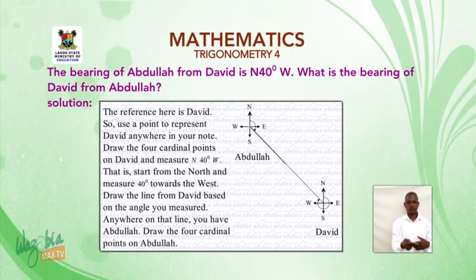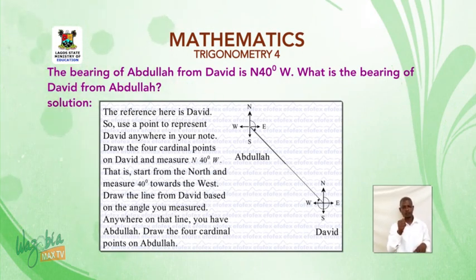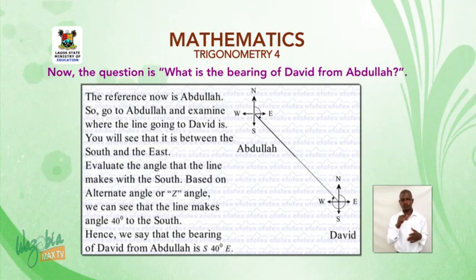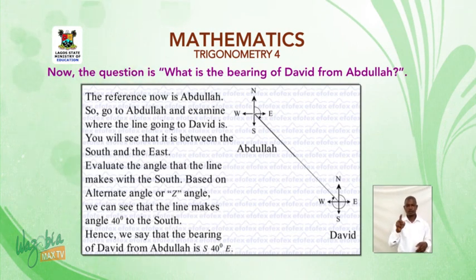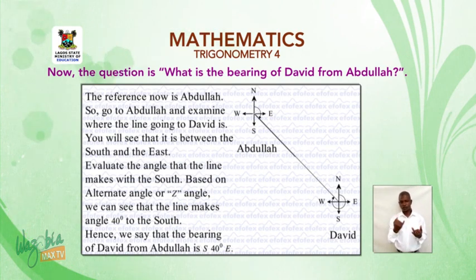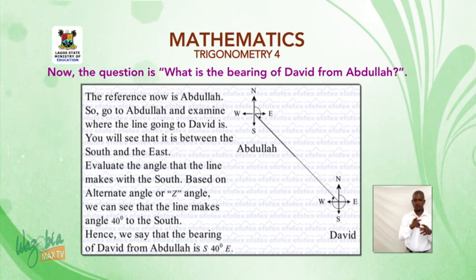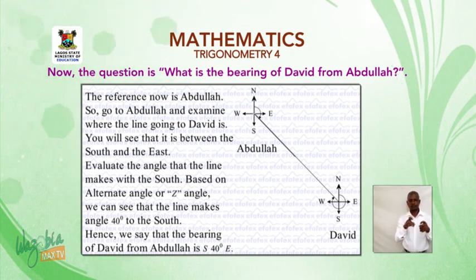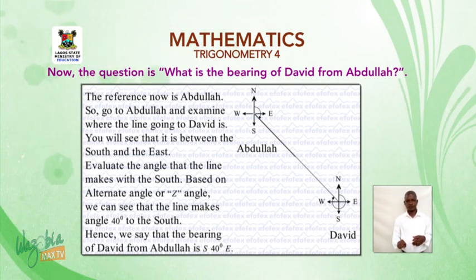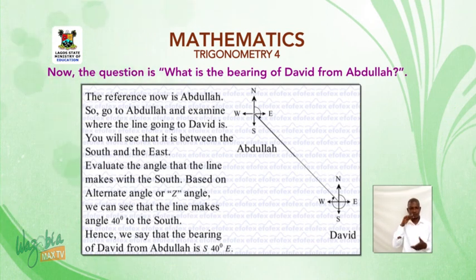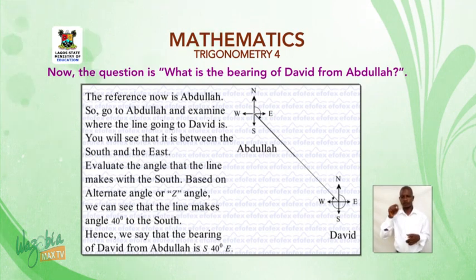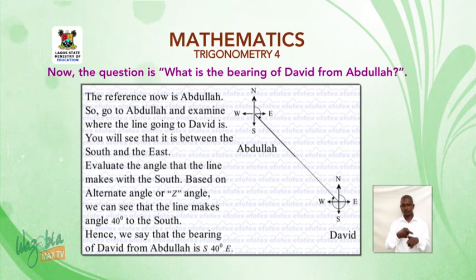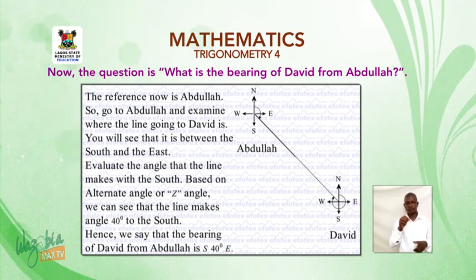Anywhere on that line you have Abdullah. Draw the four cardinal points on Abdullah as well. The question is: what is the bearing of David from Abdullah? The reference is now Abdullah. Go to Abdullah and examine where the line going to David is — you will see that it is between the south and the east. Evaluate the angle that the line makes with the south. Based on our Z-angle, the line makes 40 degrees to the south. Hence, the bearing of David from Abdullah is 40 degrees east of south.